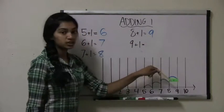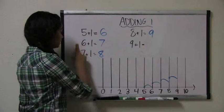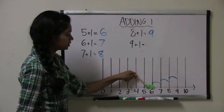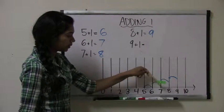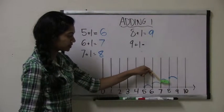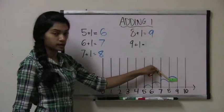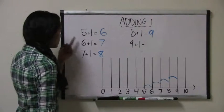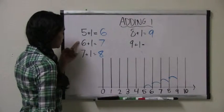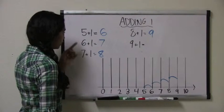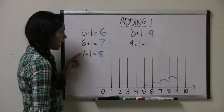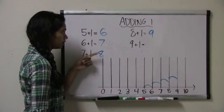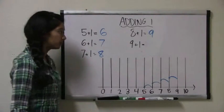So as you can see, every time I'm going down the list in order, all I'm doing is shifting this green bar over by 1 each time to make the answer greater by 1 each time. So whenever I add 1 to this number, or increase this number by 1, I also increase the answer by 1, or add 1 to the answer each time.